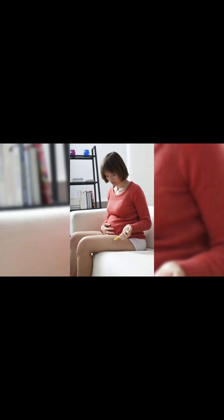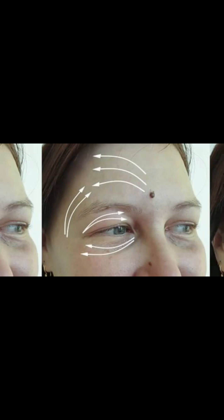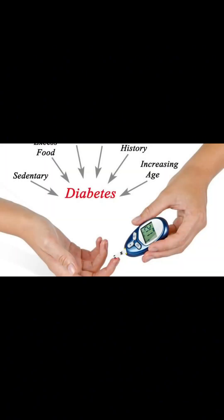Some people may have diabetes without experiencing any noticeable symptoms, especially in the early stages. Several risk factors contribute to the development of diabetes, including genetics, family history, obesity or being overweight, sedentary lifestyle, and poor diet high in processed foods and sugar.